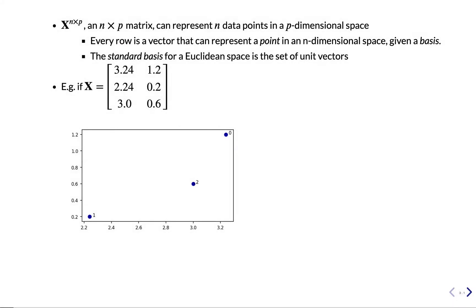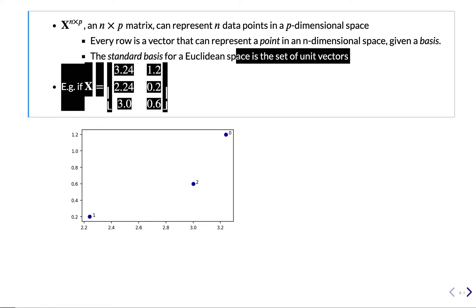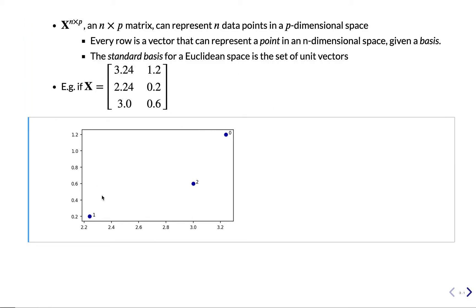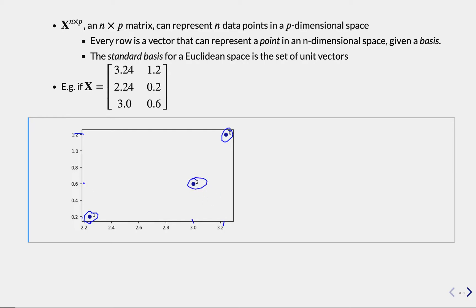Matrices typically have a geometric interpretation. Whenever we have a matrix n times p — meaning n rows and p columns — this matrix represents n points in a p-dimensional space, typically Euclidean space. For instance, the first element here is 3, 2, 4 and then 1.2, so that's this point here. The second point 2, 2, 4 times 0.2 is this one, and the third point 3, 0.6 is this one. So this represents a data set of three points in a two-dimensional space.